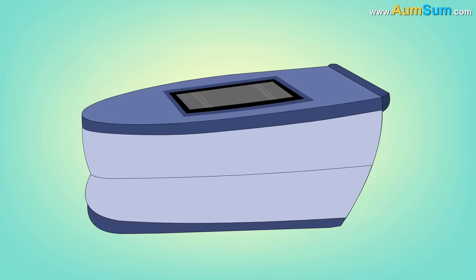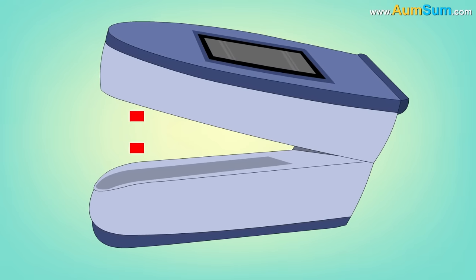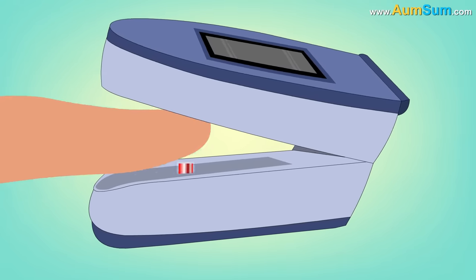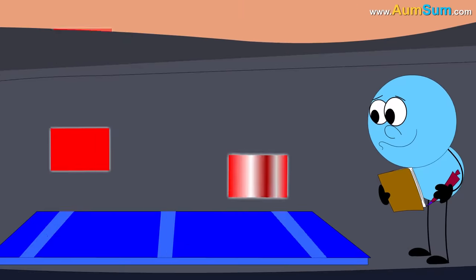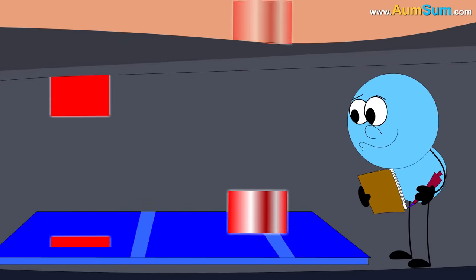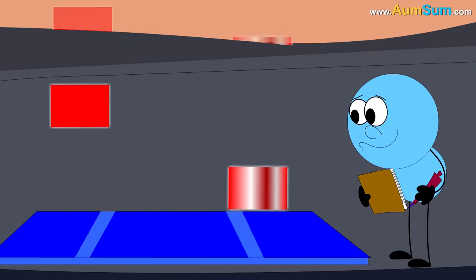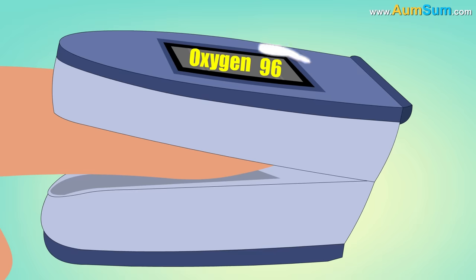Now, a pulse oximeter has LEDs which emit red as well as infrared light. These lights pass through our finger and are detected by a photodiode on the opposite end. Finally, by measuring changes in the light absorption, a pulse oximeter is able to give us the oxygen level in our blood.